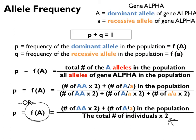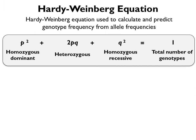This is how you can calculate an allele frequency. If you have the value of P or Q, you can also apply the Hardy-Weinberg equation. The Hardy-Weinberg equation adds up all the different genotypes in the population, and together these different genotypes should equal one. This is used to calculate and predict genotype frequency from allele frequencies or vice versa — if you have information about a genotype frequency, you can work backwards to deduce information about an allele frequency.